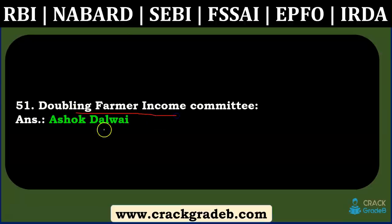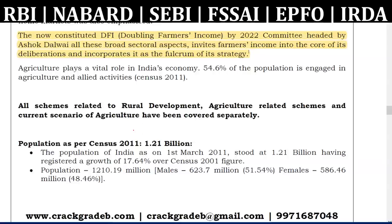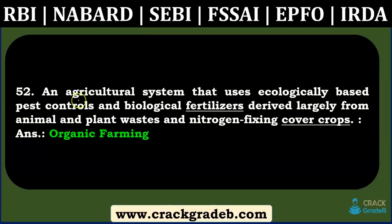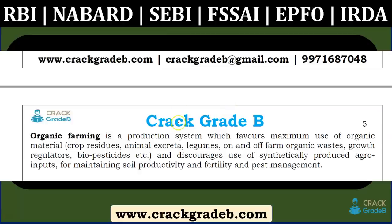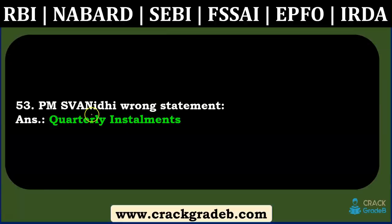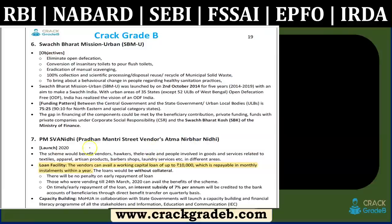Doubling farmer income committee was covered in the MCQs and the rural development chapter. Organic farming-related questions were covered in the static part. PM SVANidhi — wrong statement: quarterly installments — actually monthly installments that vendors have to pay — covered in the scheme chapter under Ministry of Urban Housing.